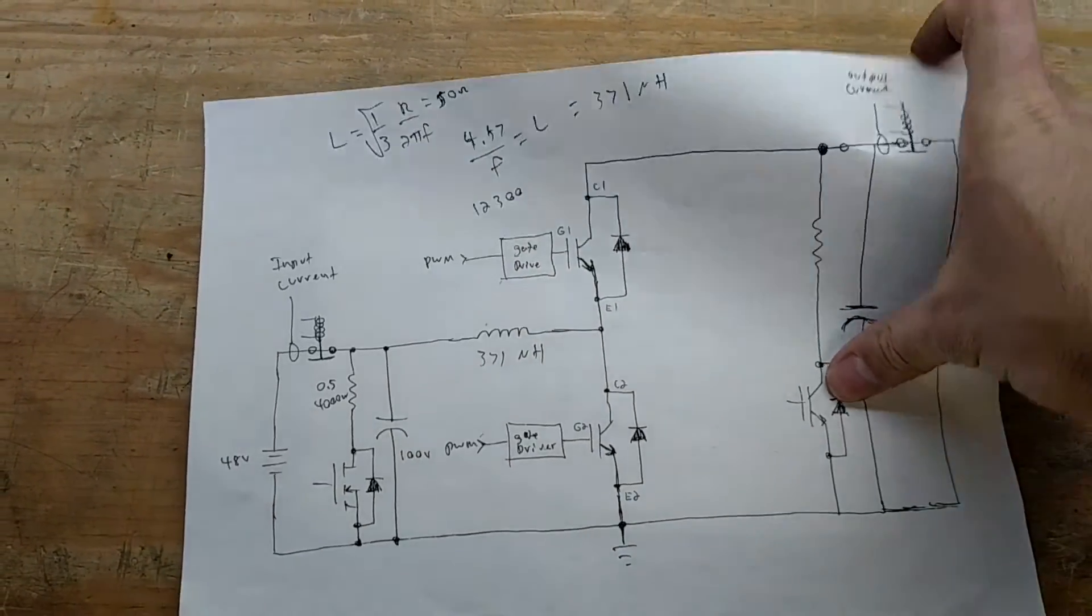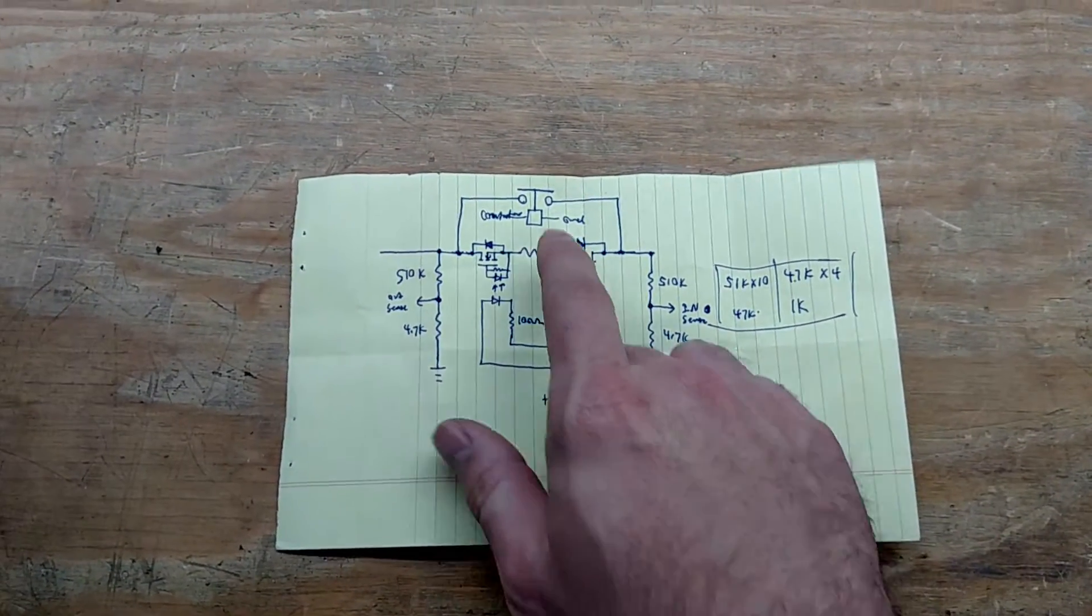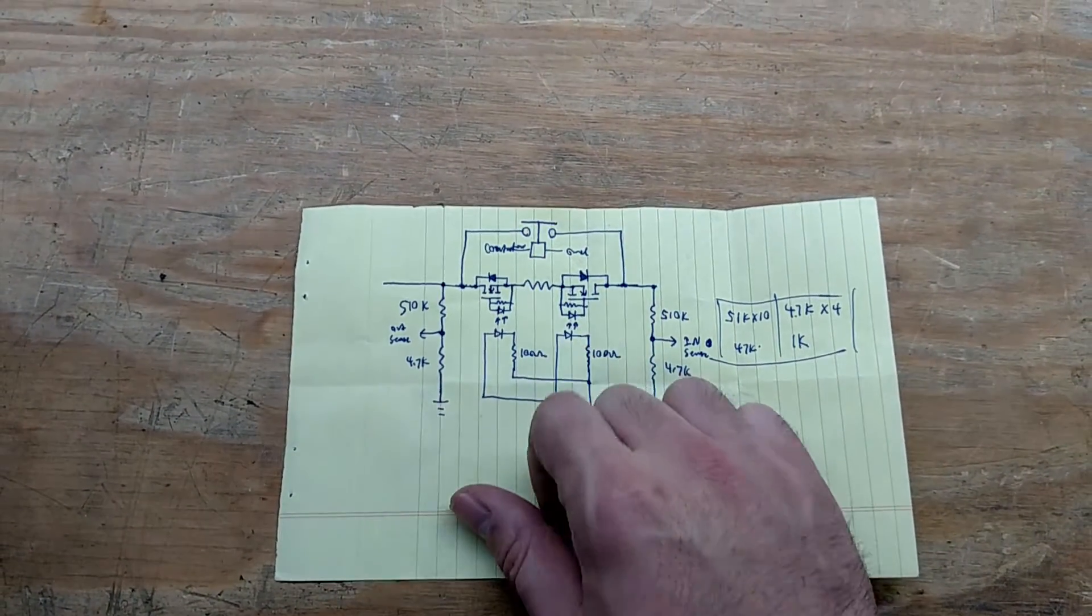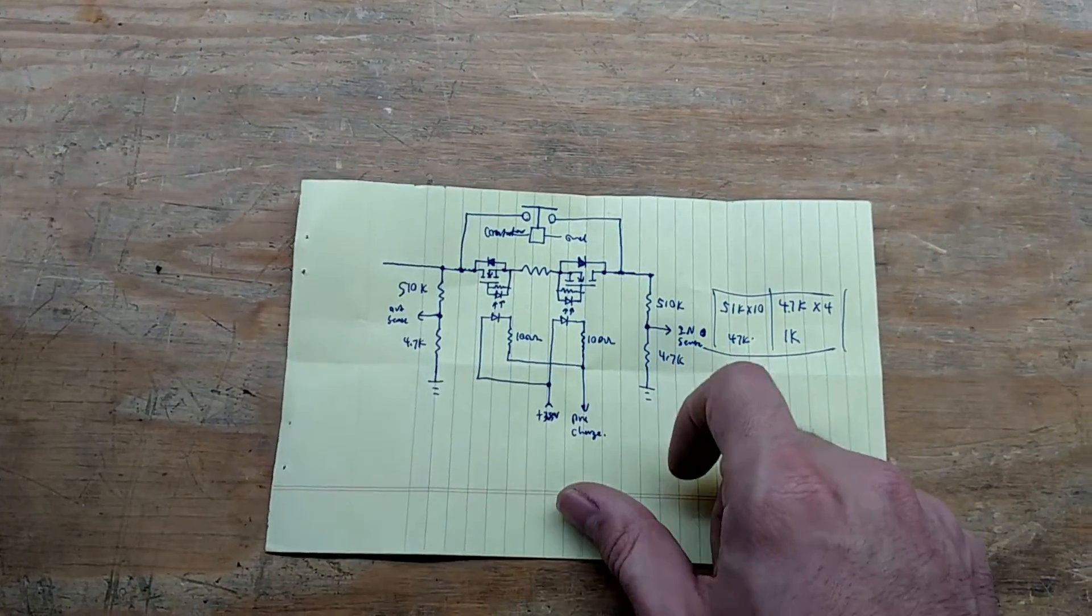So this is the pre-charge circuit. Again, another crude hand-drawn thing. Here's my contactor up here and this will be incoming voltage, outgoing voltage, that kind of thing because it's bidirectional, right?